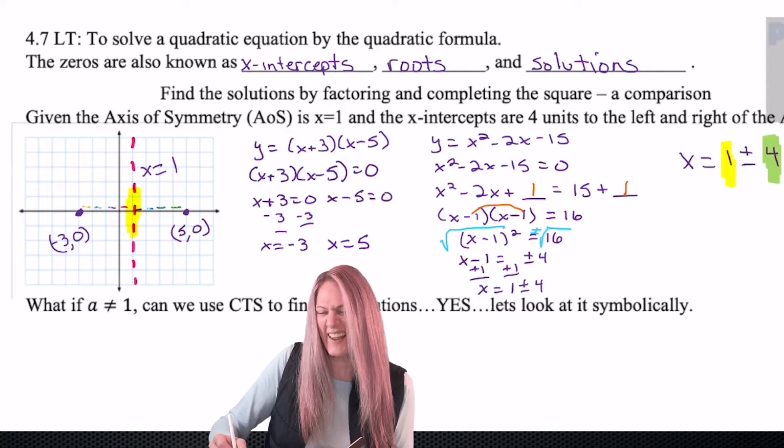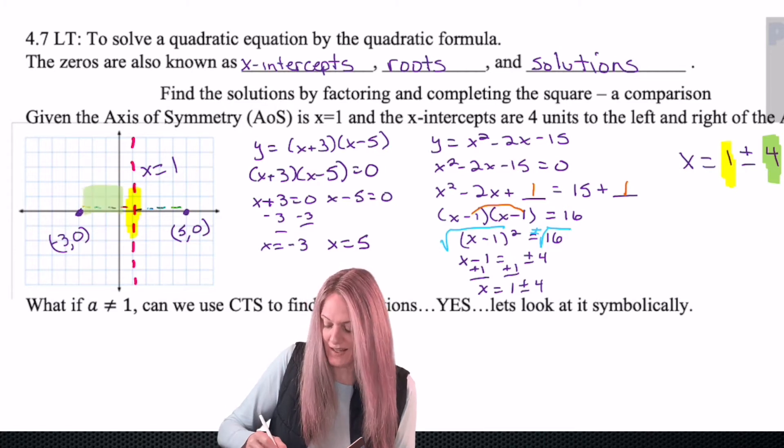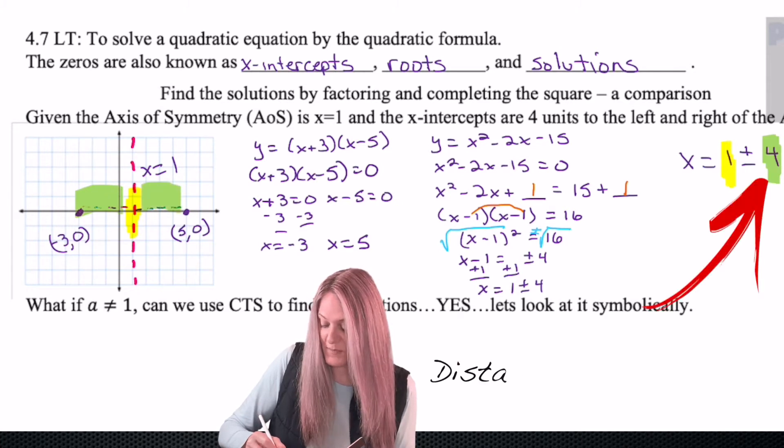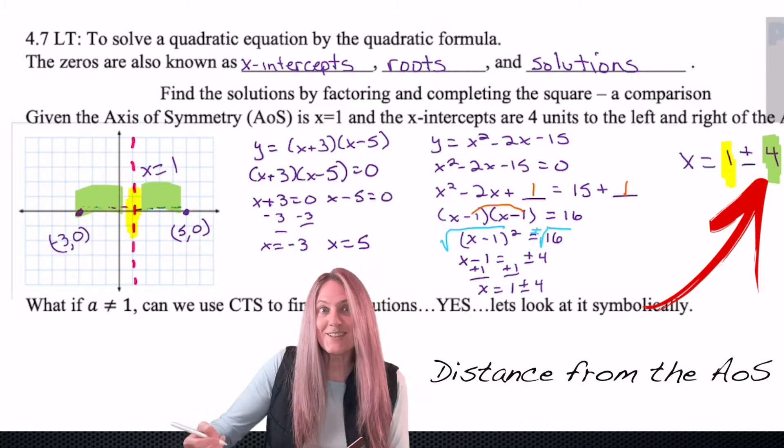Well, 4 and it's plus 4 and minus 4. Well, wait a second. The axis of symmetry minus 4, negative 3. The axis of symmetry plus 4, 5. Hmm. Interesting.